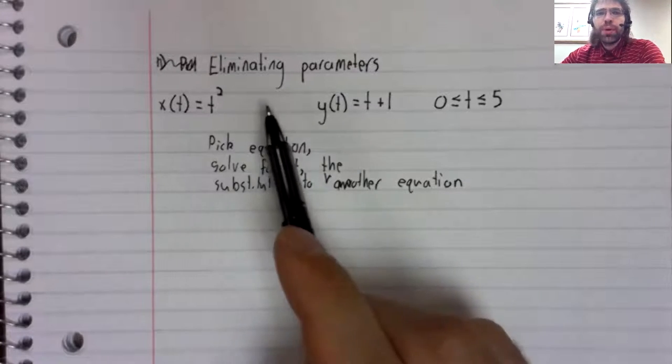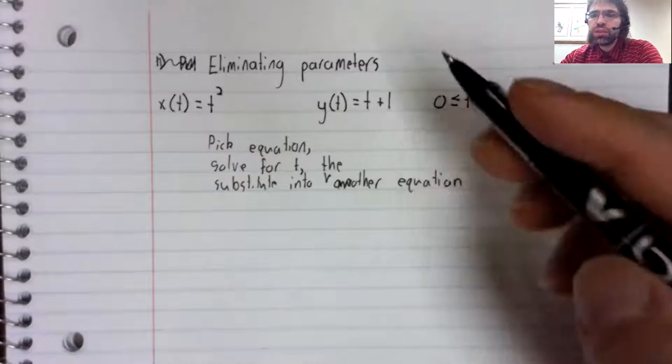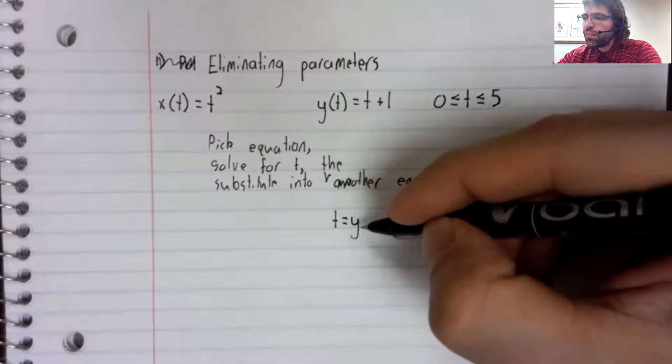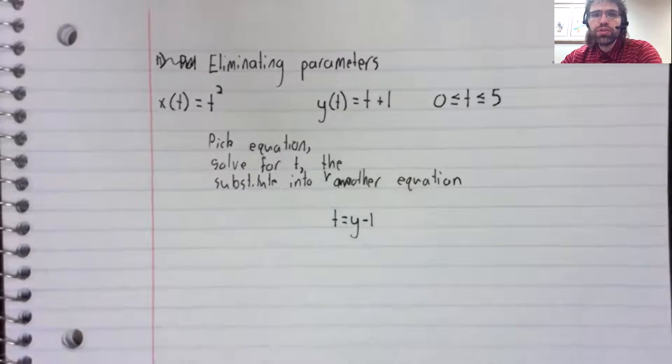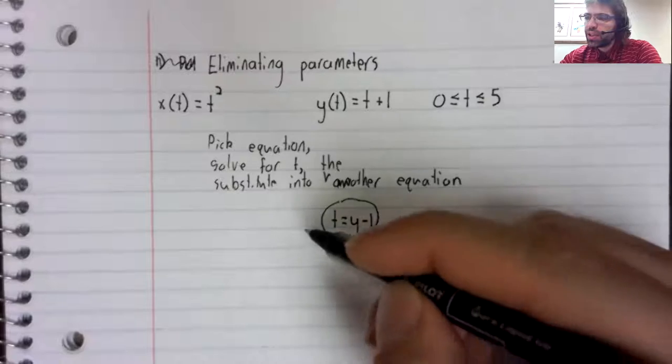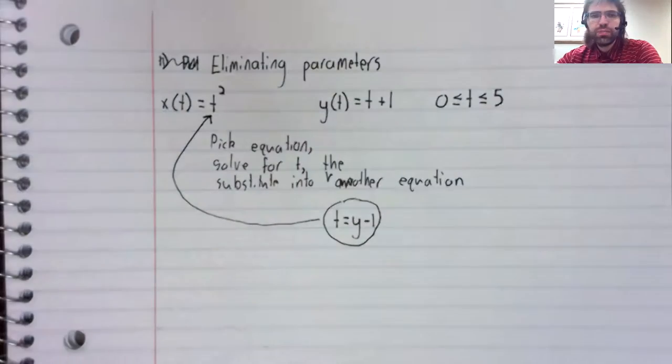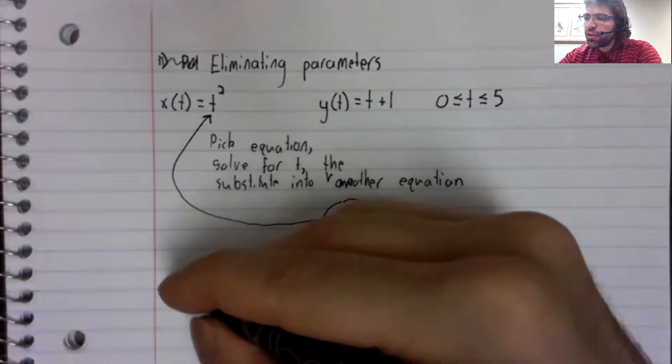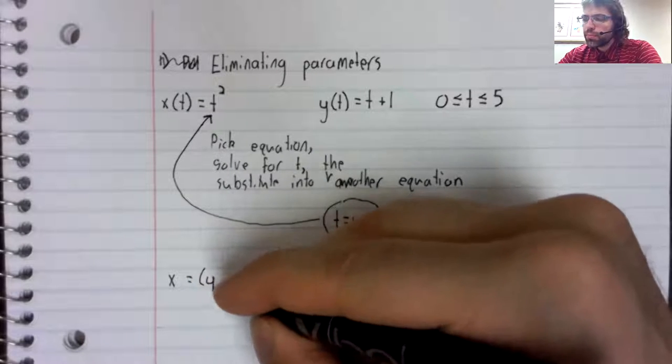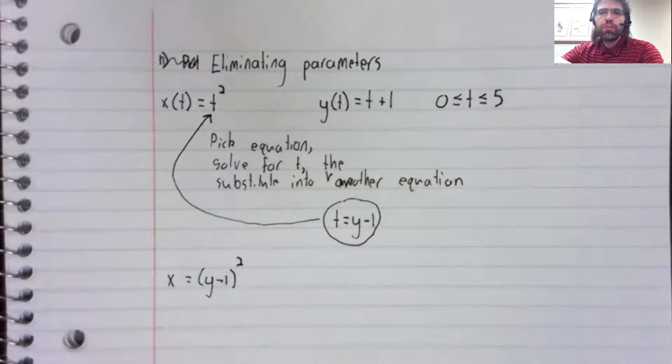But looking at what we have up here, if Y equals T plus one, then T equals Y minus one. And if we take this and plug it in there, we get X equals Y minus one squared.